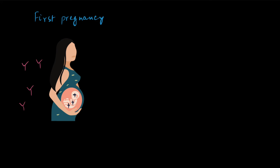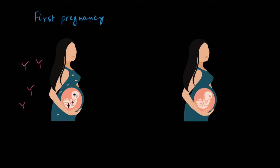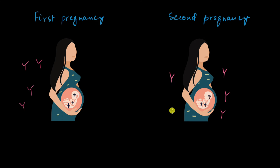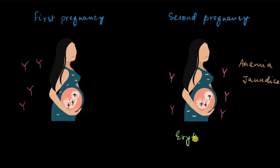In the second pregnancy, if she carries another RH positive child, she already has antibodies from the first exposure. These antibodies will attack the RH antigen of the new child. In the worst case, this can be fatal to the child; otherwise, the child can be born with anemia and jaundice. This condition is called erythroblastosis fetalis.